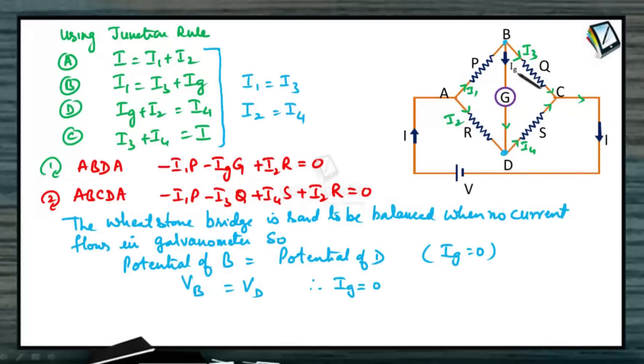Substituting IG equals 0 and I1 equals I3 and I2 equals I4 in these two equations. IG equals 0 gives you minus I1P plus I2R equals 0. Minus I1P minus I3, I3 I can replace by I1, I1Q plus I4S, I4 I can replace by I2, I2 into S plus I2 into R equals 0. Let us rewrite these two equations substituting these values.